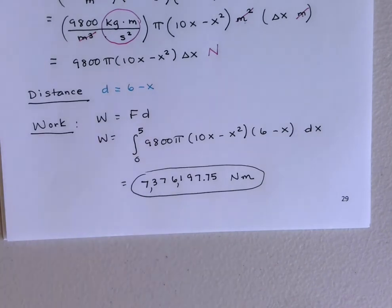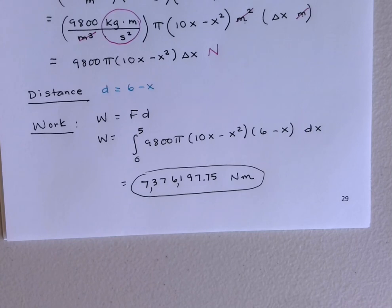That brings us to the end of our work discussion. The three types of work to know are: lifting objects, the work required to stretch or compress a spring, and now the work required to pump liquid out of a tank. We'll come back with one more video for Section 6.7 covering fluid pressure and force.